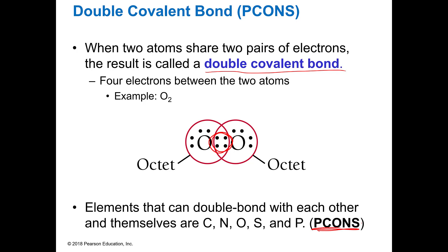And I have a little anagram for this called pecans. So the only things that can double bond are called pecans. Phosphorus, carbon, oxygen, nitrogen, and sulfur. So it just stands for the first letter of each of those. So with pecans, you can double bond.